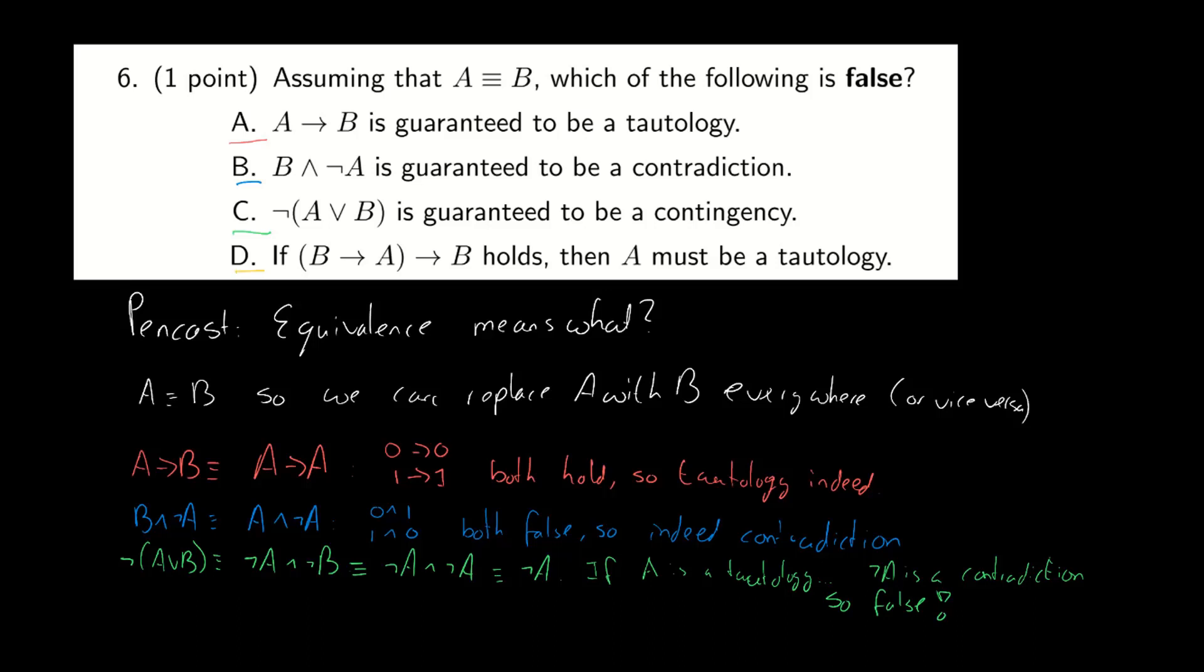But let's give answer D a go anyway. B implies A implies B. Okay so that's the same as B implies B implies B. So B implies B. We've seen this before. That was the first answer. So that one is always true. So something that's always true implies B. If this thing holds, right, that's what we've been given, then it must mean that B is a tautology. Otherwise we could have the case where 1 implies 0 which is false. So it wouldn't hold.